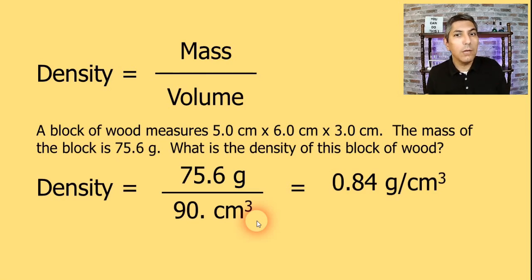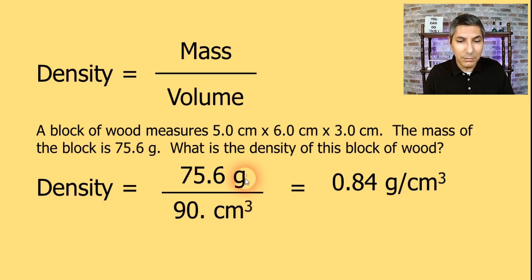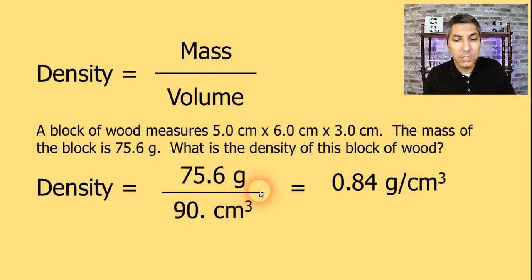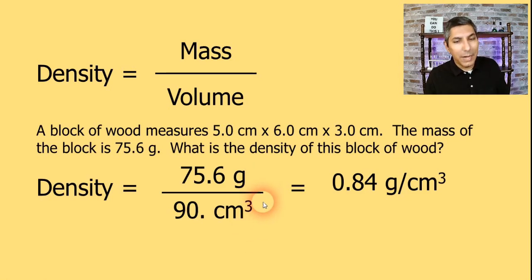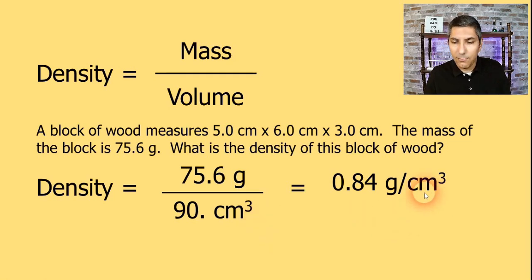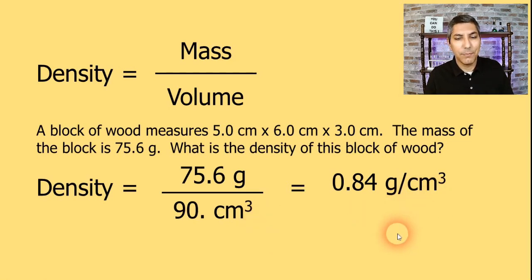Don't leave out the units. If we have the mass in grams and the volume in cubic centimeters, the units will be grams per cubic centimeter. Any legitimate unit of mass divided by any legitimate unit of volume will give us a valid unit of density.